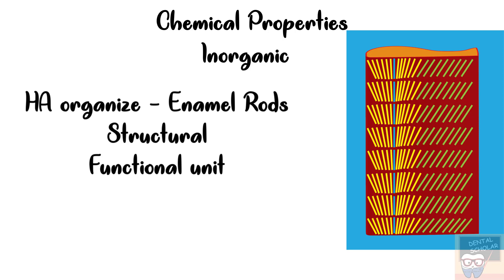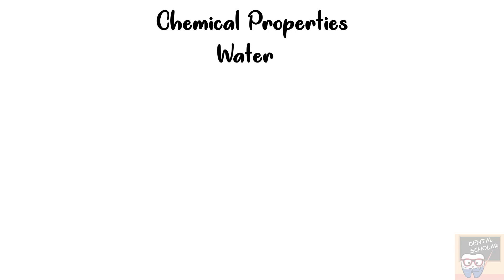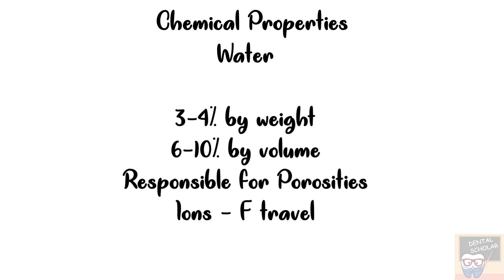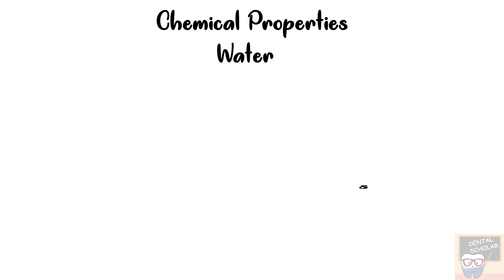The next component I would like to tell you about is water. It constitutes about 3-4% of enamel by weight and about 6-10% of enamel by volume. Water is mainly responsible for the porosities of enamel. With age the amount of water decreases and mineralization increases so the porosities reduce upon aging. Like I already told you ions like fluoride easily travel through water.